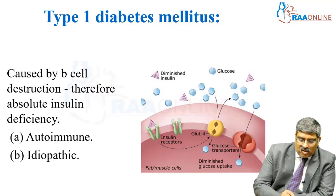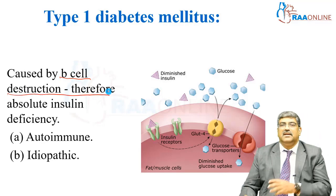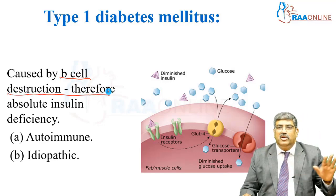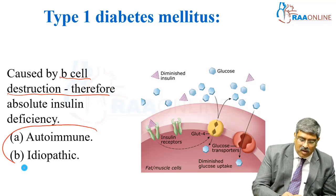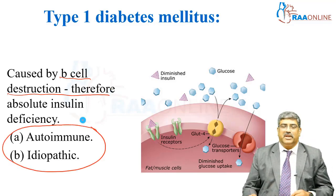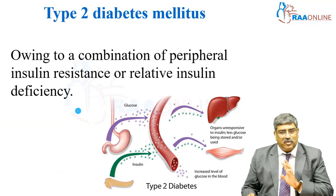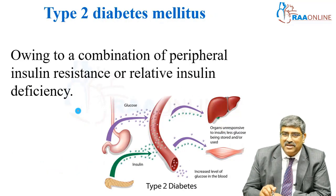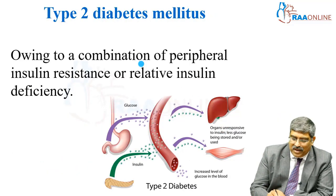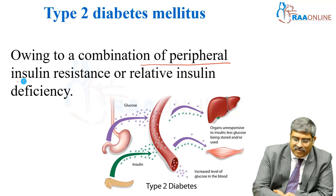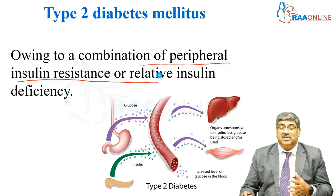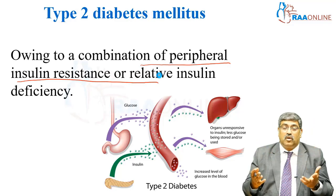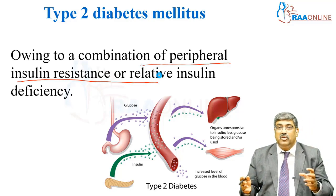In type 1, it is caused by beta cell destruction of the pancreas. There is absolute insulin deficiency — there is no insulin. It can be caused by autoimmune or idiopathic factors. Coming to type 2, here insulin production is present, but there is peripheral insulin resistance or a relative insulin deficiency, which means more glucose is produced than the insulin can counter.